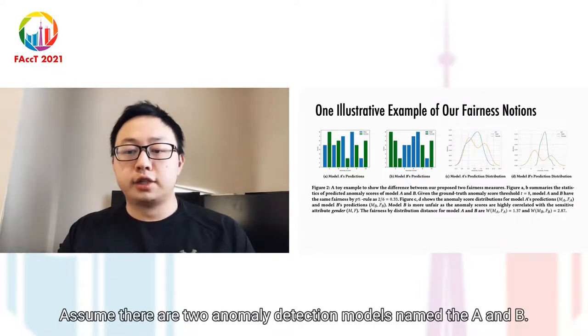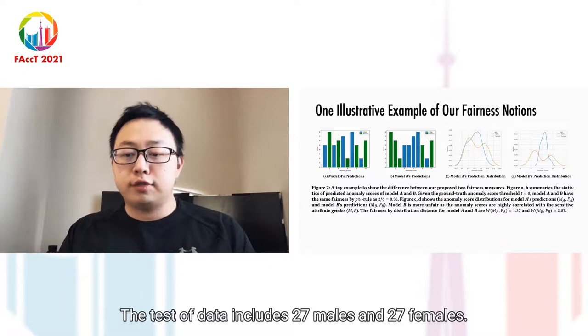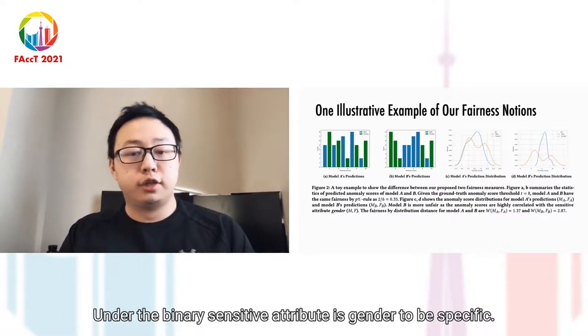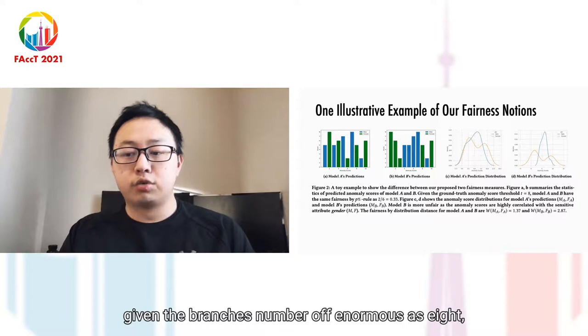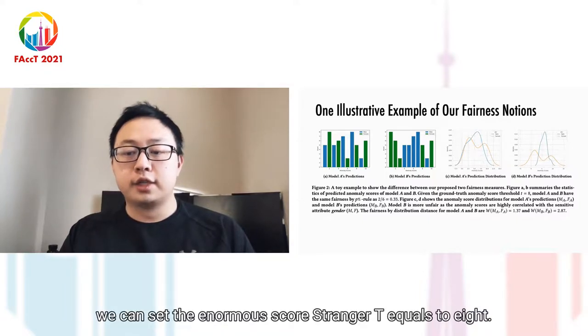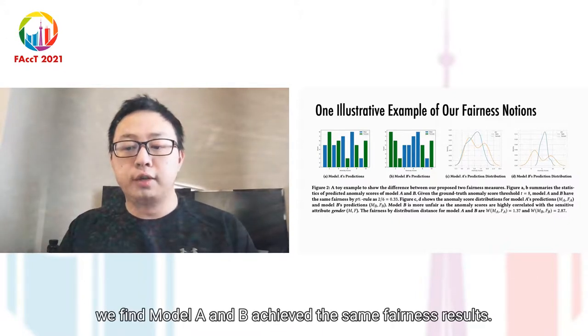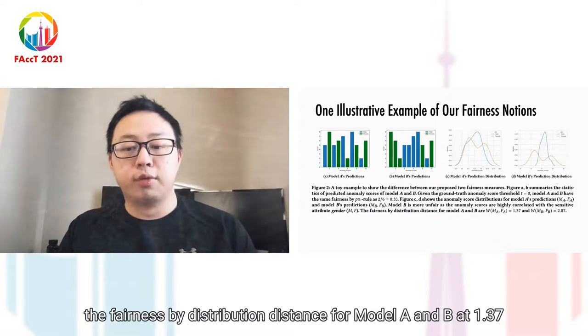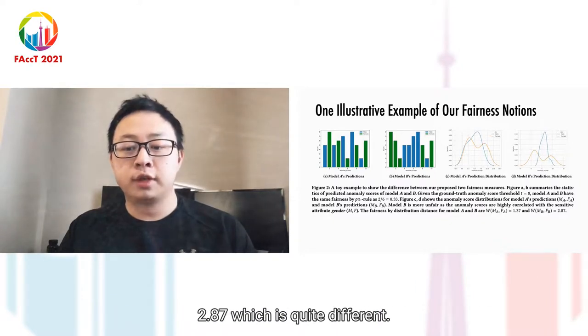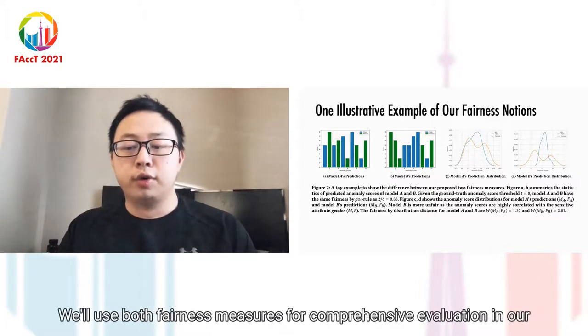We have designed one synthetic anomaly detection problem to show the motivation of our second fairness measure. Assume there are two anomaly detection models named A and B. The test data includes 27 males and 27 females, and the binary sensitive attribute is gender. Given the ground truth number of anomalies as 8, we can set the threshold T equals 8. Based on fairness by P rule, we find models A and B achieve the same fairness results. However, the fairness by distribution distance for models A and B are 1.37 and 2.87, which is quite different. This suggests that model B tends to be much more unfair.